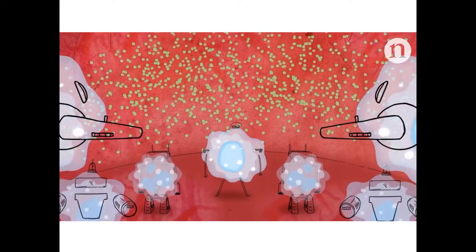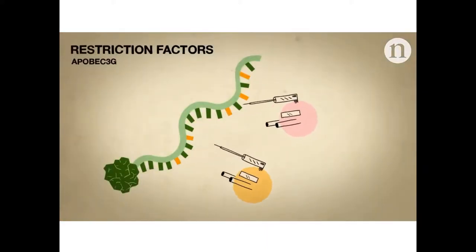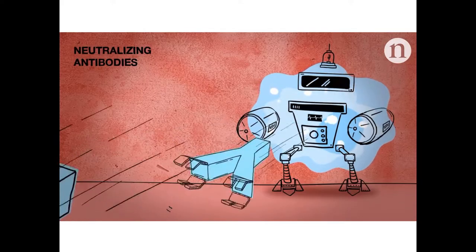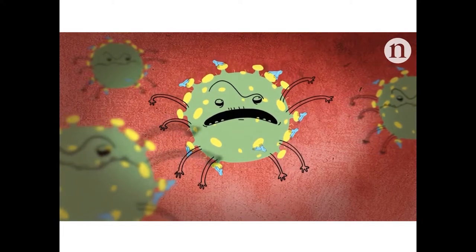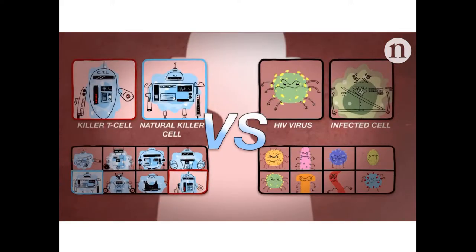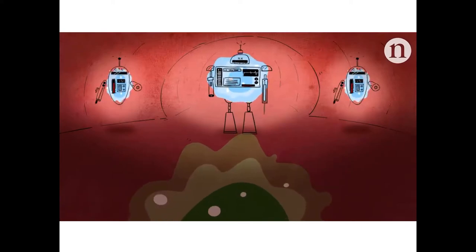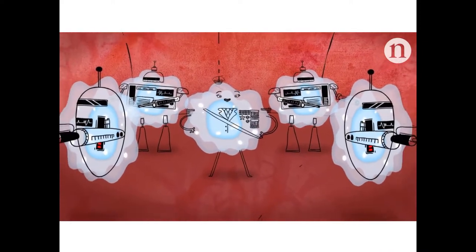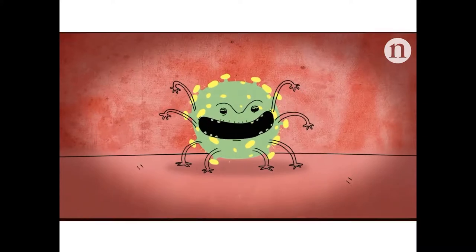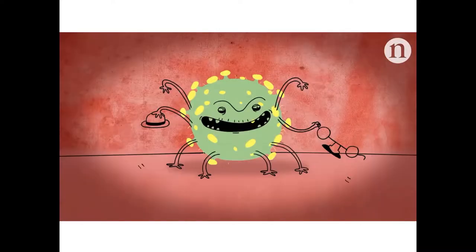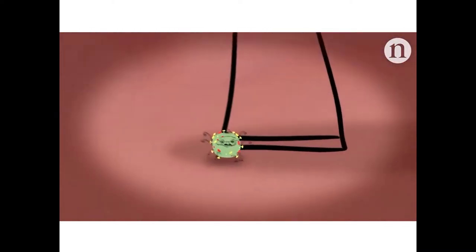HIV levels rise rapidly, but the immune system fights back. Inside infected cells, restriction factors work to shut down virus production. Outside, B cells produce neutralizing antibodies that bind to surface spikes on HIV particles. Killer T cells and natural killer cells seek and destroy infected cells by releasing perforin, which punctures the infected cells and allows enzymes to trigger auto-destruction. For a while the defense holds and virus levels drop, but HIV begins its counterattack — disabling antiviral proteins and constantly mutating to evade detection.